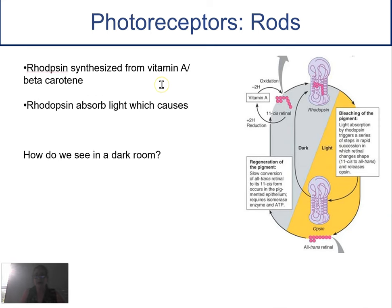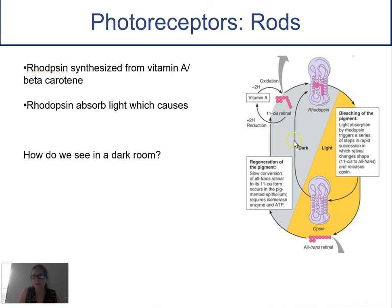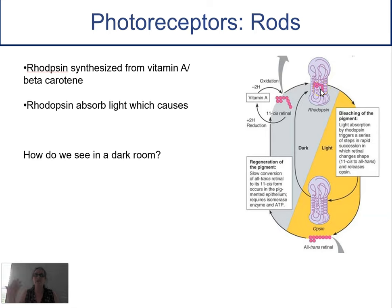Rhodopsins are made from vitamin A and beta-carotene, and when they absorb light, they get bleached. This has to be remade constantly because once it's bleached, you have to re-synthesize it. When light hits it and bleaches it, it takes a little bit of time to remake it. So if you go into a dark room and turn the lights off, you can't see at first — think about going into a movie theater. It takes time to re-synthesize all that rhodopsin, and once you make more, you can slowly start to see shapes and shades of gray again.